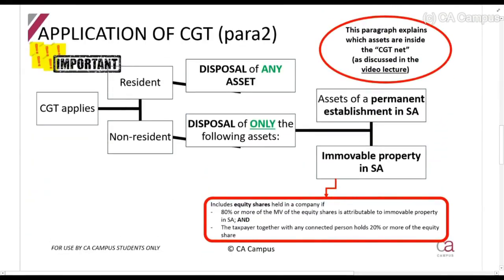Now, the application of CGT - paragraph 2. This is, in my opinion, probably the most important paragraph to start with. If you don't understand this, you will struggle with a lot of the rest of the sections, because this section tells us when capital gains tax will be applicable and in respect of which assets. You need to basically memorize this. Capital gains tax - when does it apply?